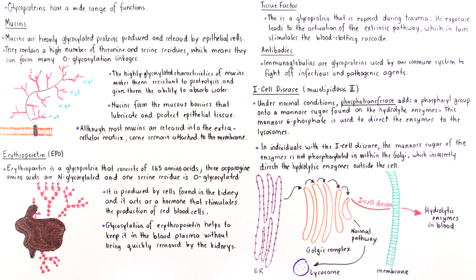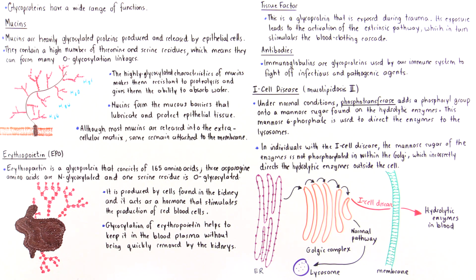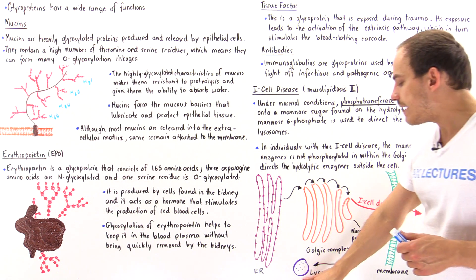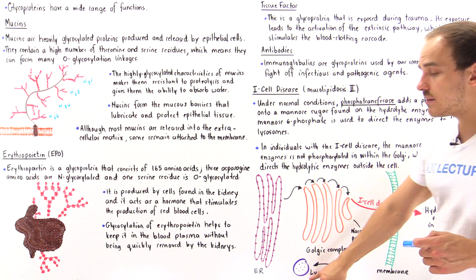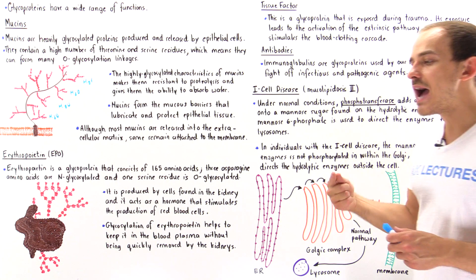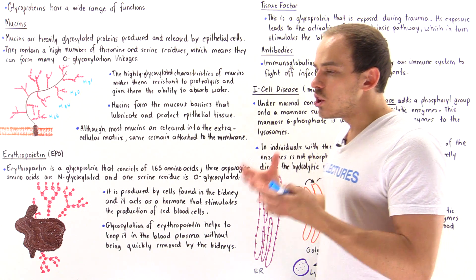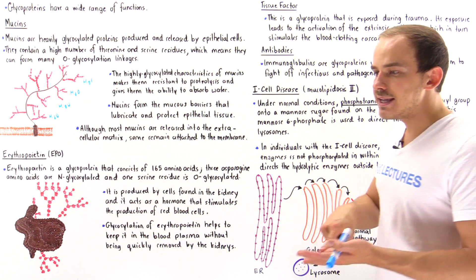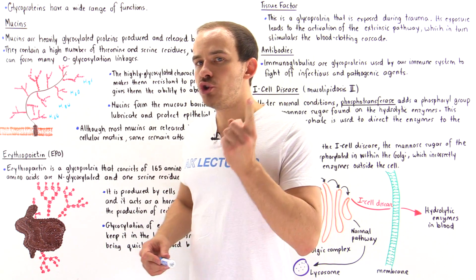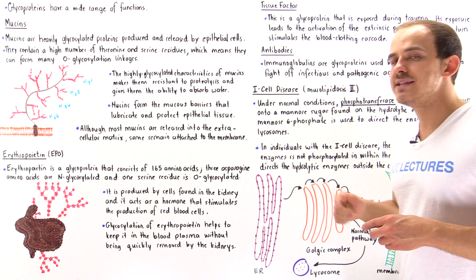The final topic in this lecture is the I-cell disease, also known as mucolipidosis 2, which is a lysosomal storage disease. Inside our normal cells we have an organelle known as a lysosome, and inside the lysosome we have hydrolytic enzymes that recycle and break down different types of byproducts produced inside the cells — things like large carbohydrates, glycosaminoglycans, and glycolipids. Under normal conditions, these hydrolytic enzymes are produced inside the ER, then modified inside the Golgi apparatus, and then end up inside the lysosome.